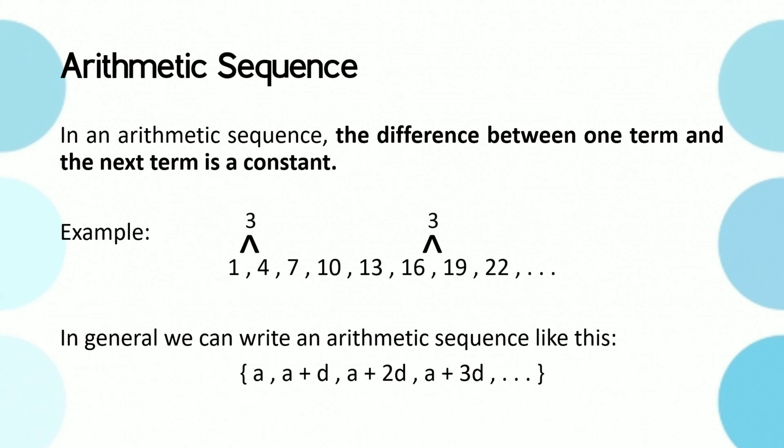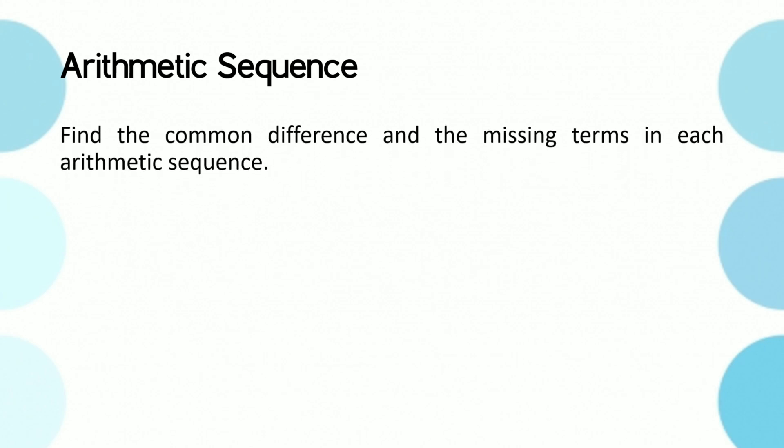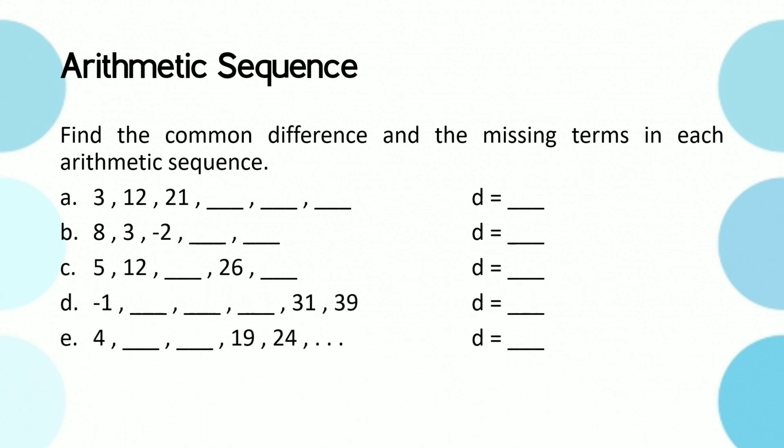Let's have some drill exercise. Again, arithmetic sequence is a sequence where every term after the first is obtained by adding a constant called the common difference.